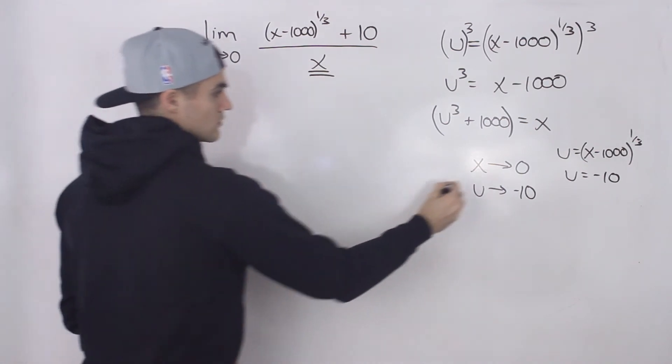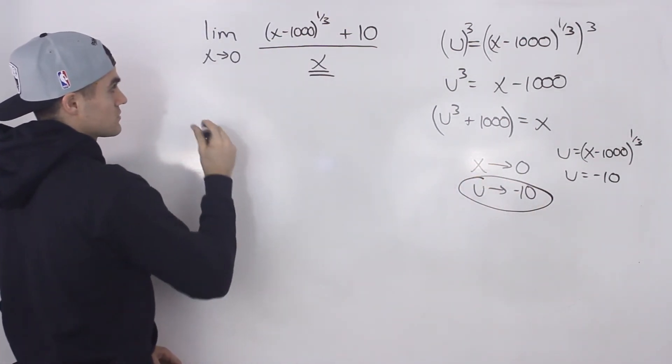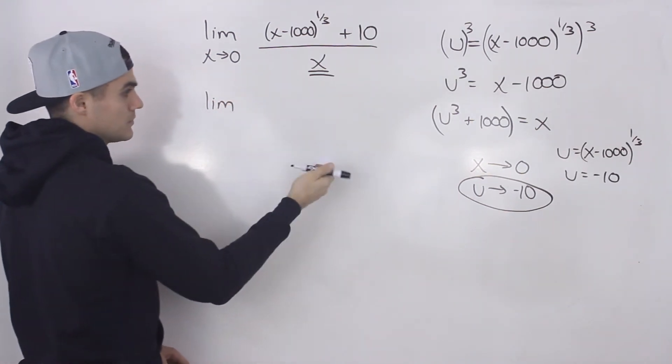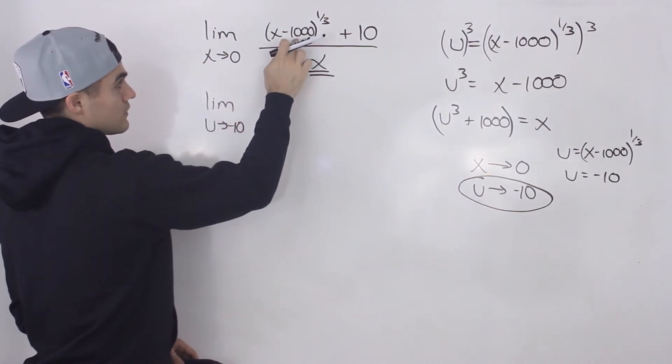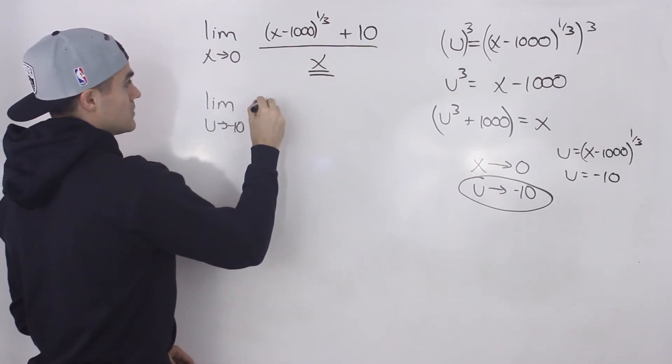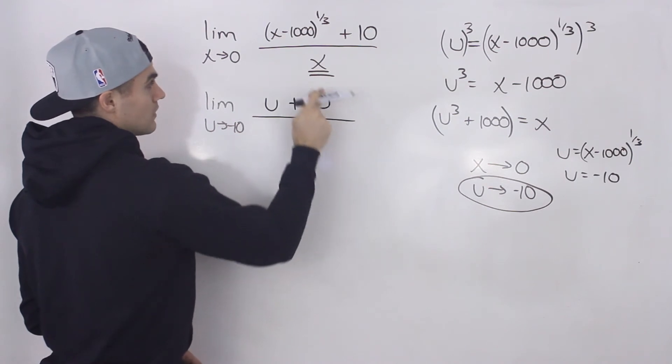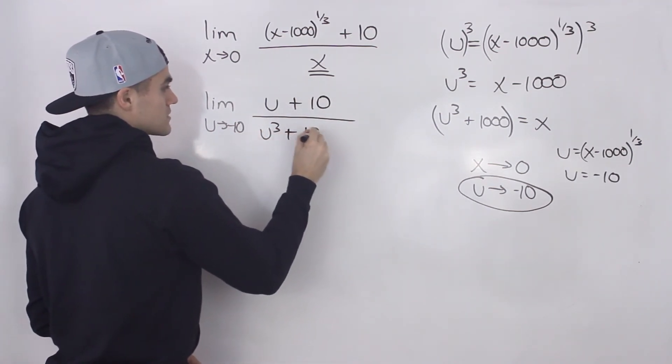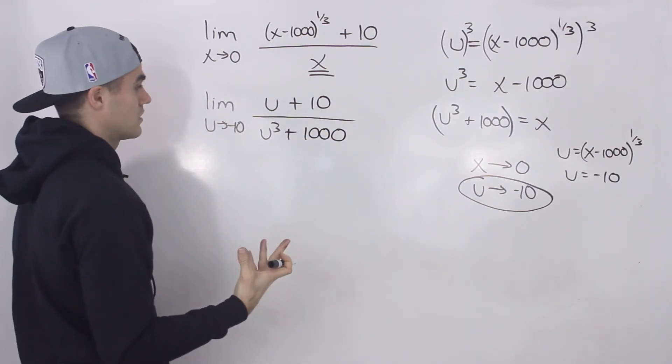So we would substitute this in for x approaching 0. Let's make all these substitutions. We've got the limit now as u approaches negative 10 of this here. We're going to sub in u for that, so that would be u plus 10 all over, and for this x, we're going to sub in u cubed plus 1,000. Right? So it's looking a lot nicer already.